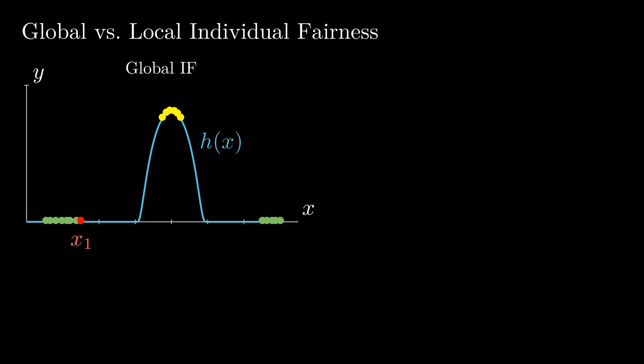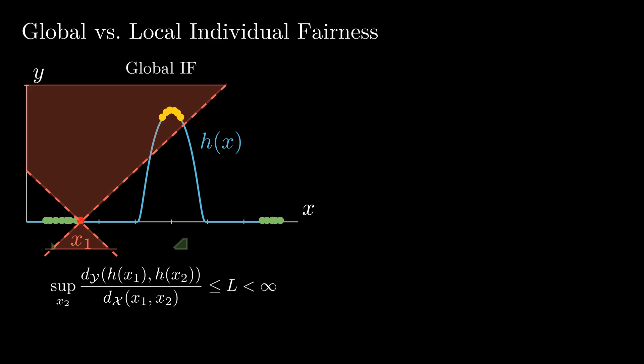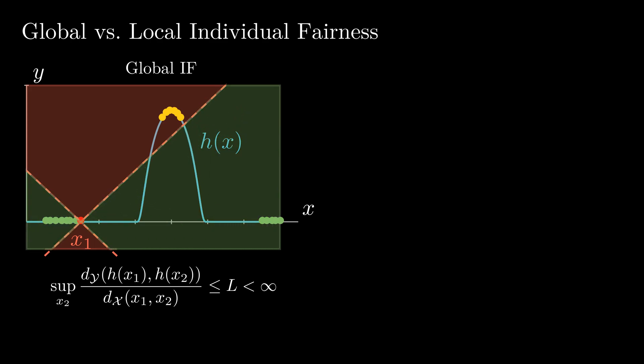As global individual fairness requires the function to be Lipschitz on the entire domain, the ratio between the output distance and the input distance must be bounded by the Lipschitz constant L for all other points x2. We draw a dashed line for the ratio and mark the regions that would violate this constraint with red, while we mark the regions that conform with this constraint green. As we can see, the yellow points violate the global IF constraint.